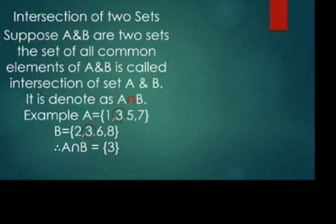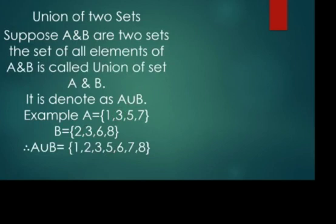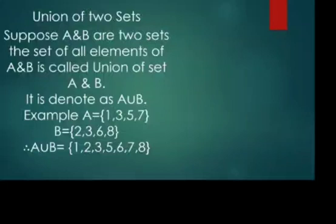Next concept: union of two sets. Union means you unite both sets — all elements from A and B together. Given sets A and B, the set of all elements of A and B is called the union, denoted A ∪ B, where the symbol is like the letter U. Using the same example, A = {1, 3, 5, 7} and B = {2, 3, 6, 8}: A ∪ B combines both sets, and since no repetition is allowed in a set, A ∪ B = {1, 2, 3, 5, 6, 7, 8}.